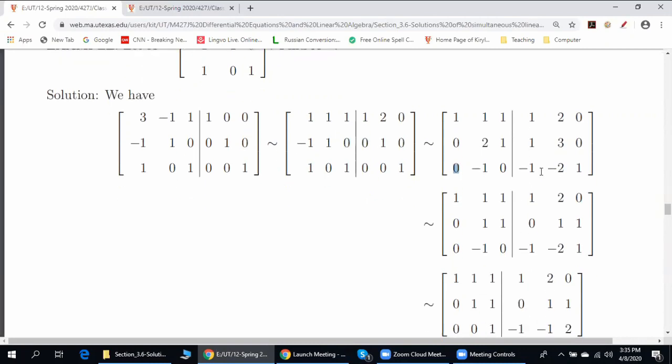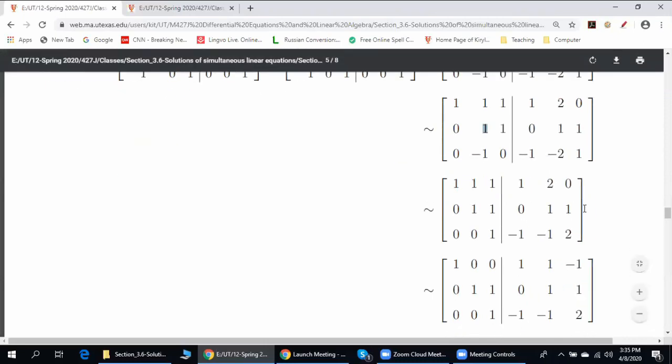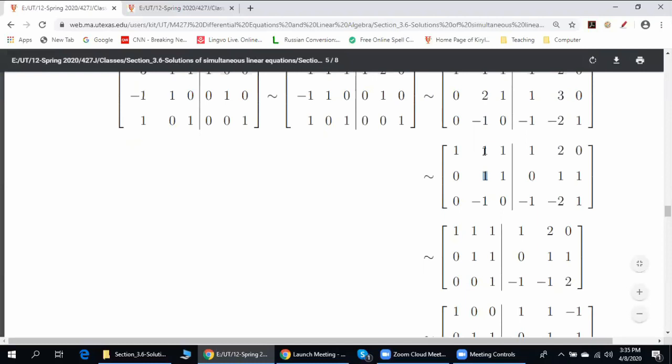Next, let us obtain one here. One way to do it is to add row number three to row number two, one. Then let us use this one to get zero here and zero here.